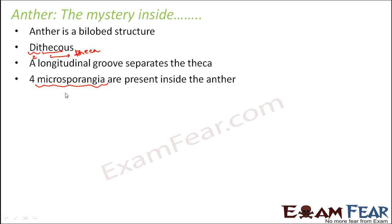Microsporangia is the plural form; in singular it is called microsporangium. It is the structure that is going to produce spores, and these spores will later give rise to the male gametophyte. You might ask: are microsporangia and pollen sacs the same thing? Microsporangia is the initial structure. These microsporangia later, over a period of time, form the pollen sacs — because they become the sacs which hold the pollen grains.